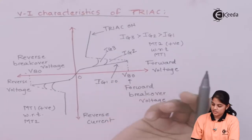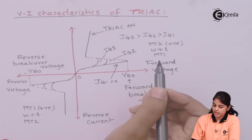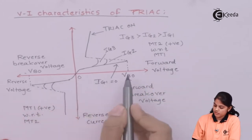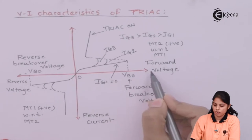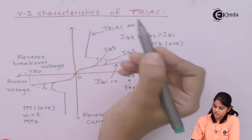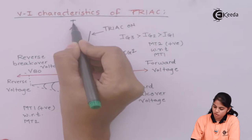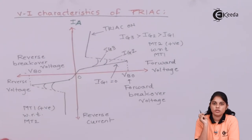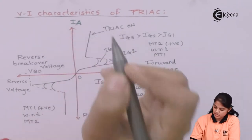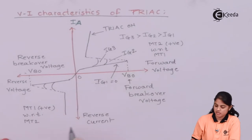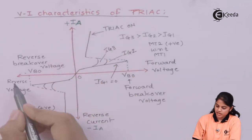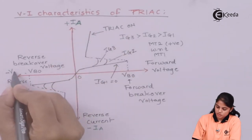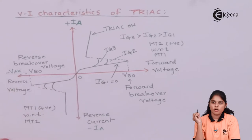Let's see the voltage and current characteristics of a TRIAC. Here I have drawn the diagram where the x-axis denotes the forward voltage and the y-axis denotes the current, that is the forward current of the TRIAC. I will denote forward current as IA and the reverse current as minus IA, while reverse voltage will be minus VAK.